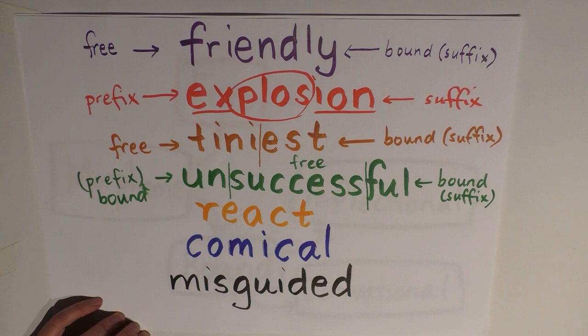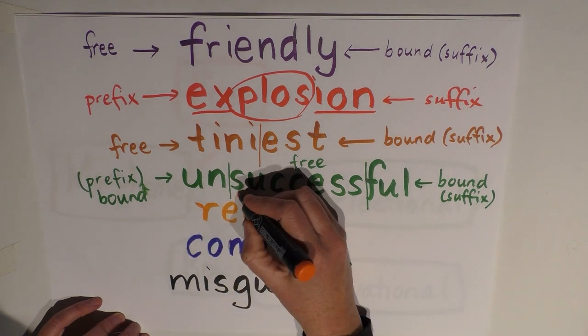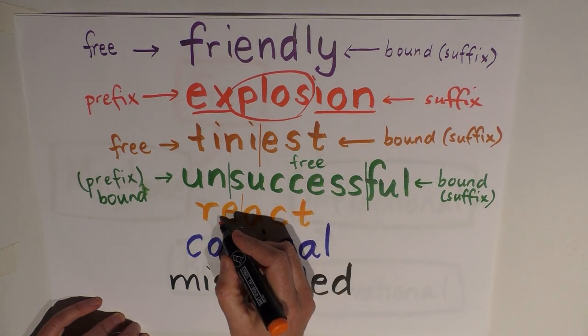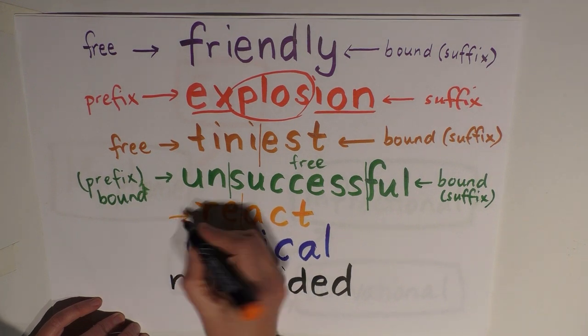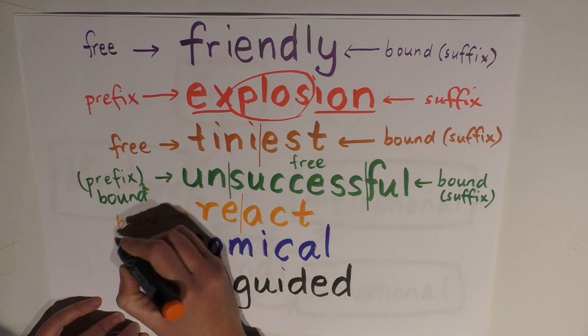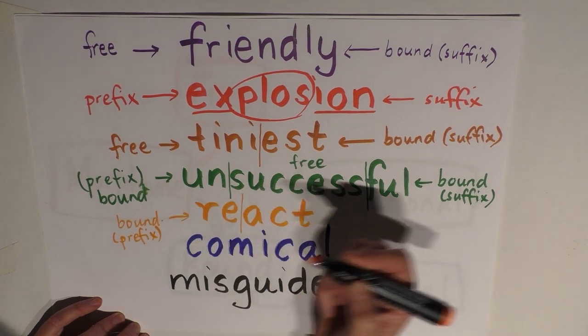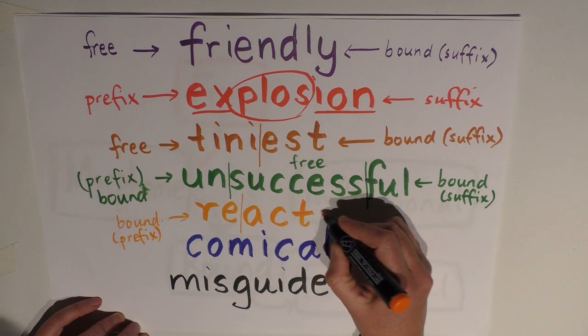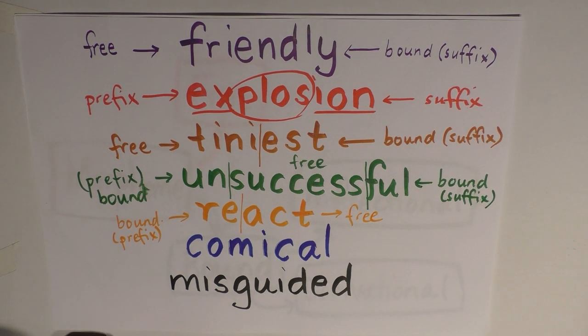Now we'll get to 'react.' Once again, we can very clearly divide this into two morphemes. We have 're,' which is a very common prefix. It's bound, meaning 'again,' usually. And we have 'act' on the other side, which is our free morpheme.